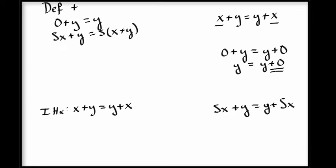So using this lemma, we can rewrite the right hand side to simply be y. And now we need to show y equals y, and of course we know y equals y. So we're done with the base case.